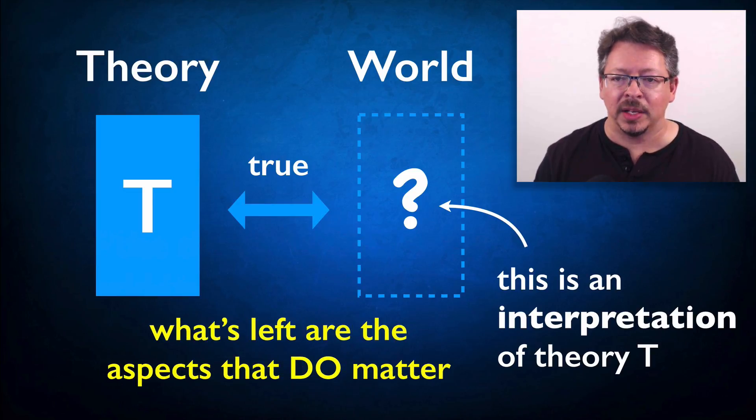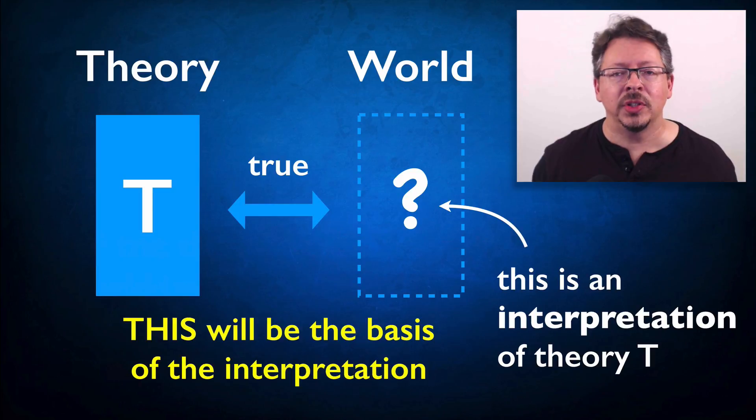These are the aspects that our theories and models have in common with the physical systems that they're used to represent. These elements that are shared in common will be the basis for whatever interpretation we come up with.